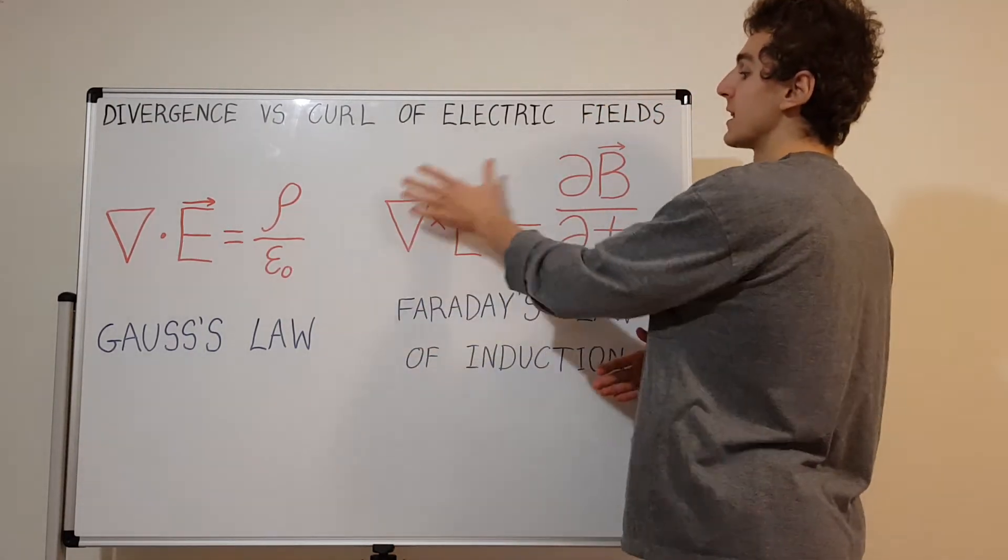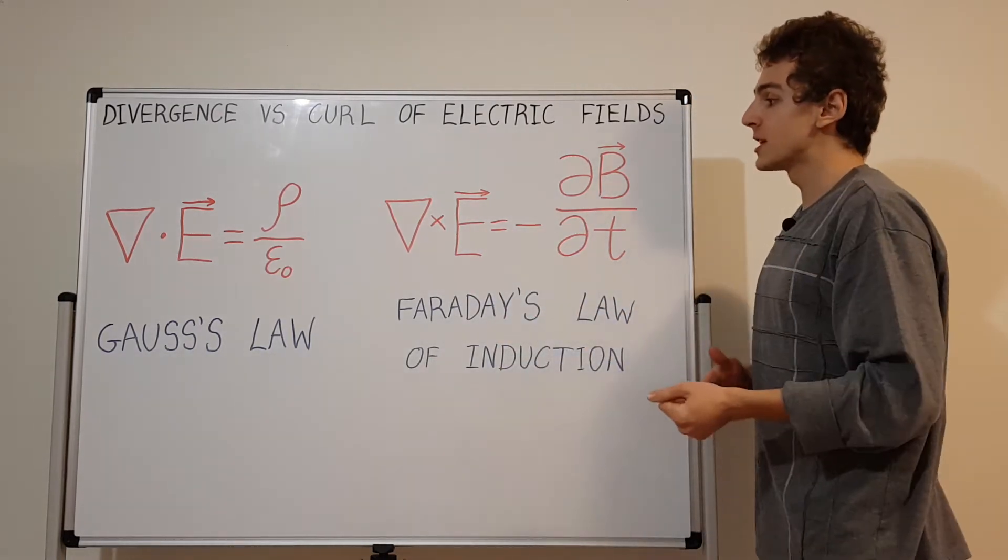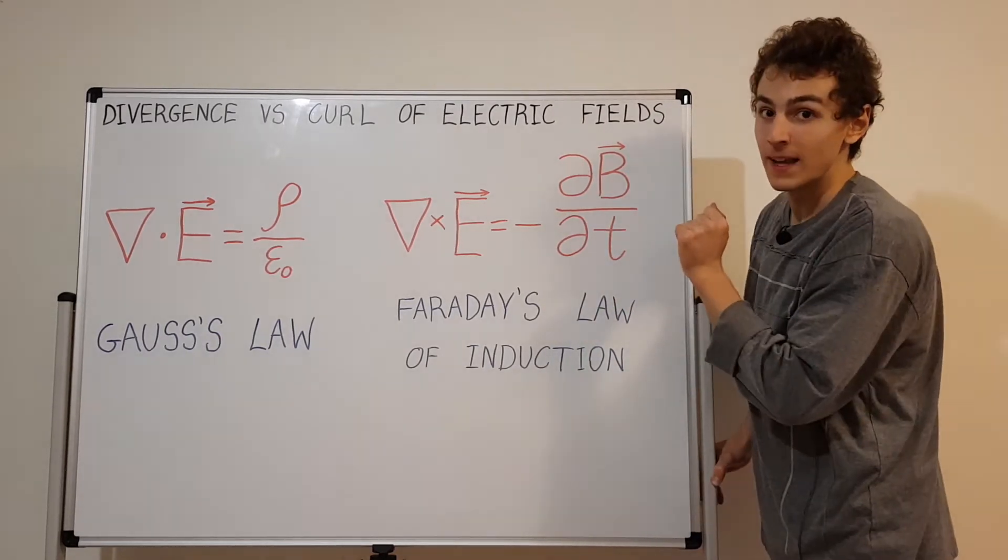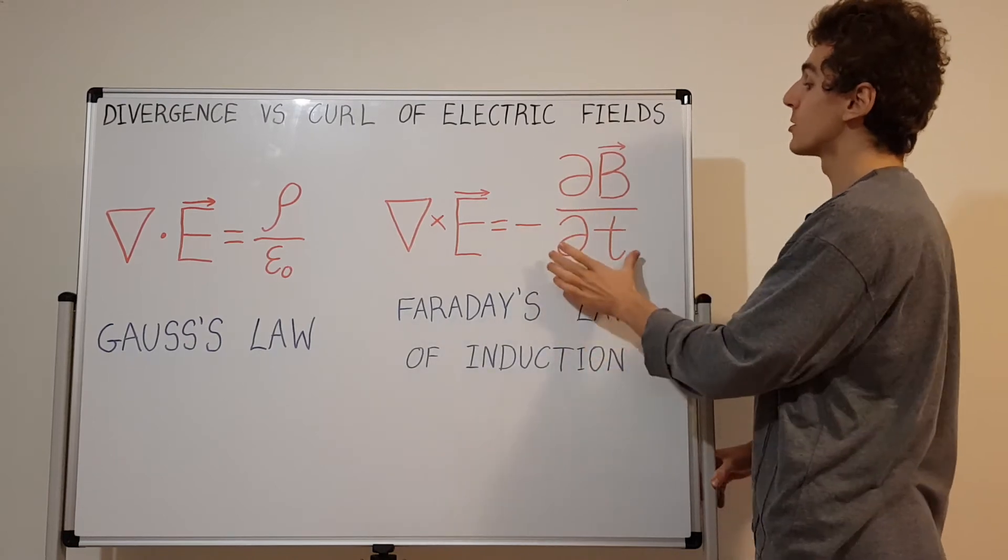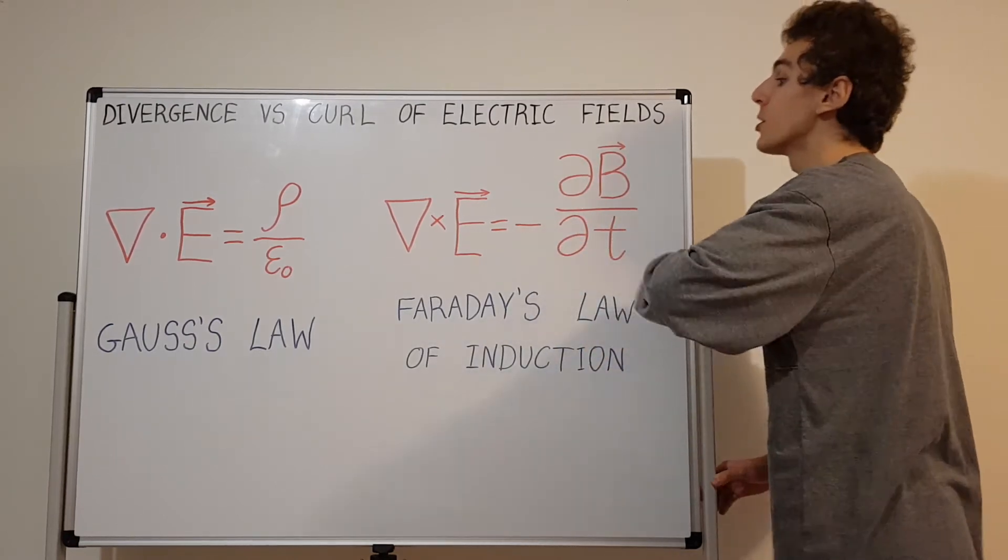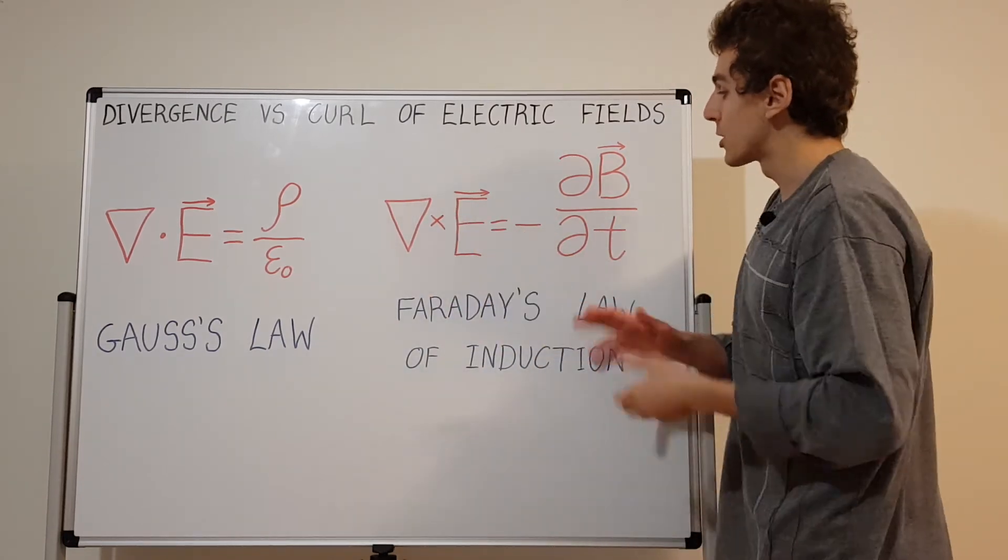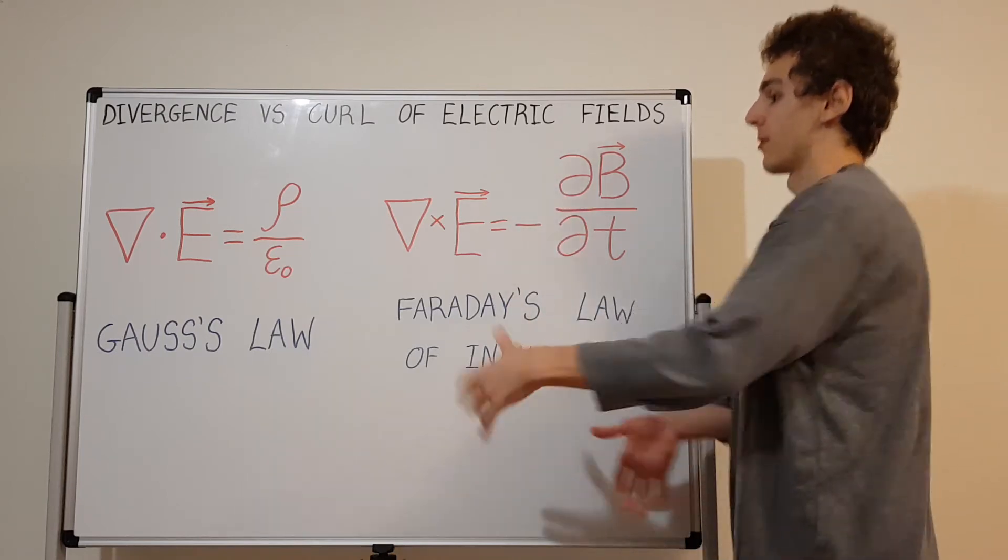What about the case for curl? Curl for the electric field can only be produced if you have a changing magnetic field. If you have a changing magnetic field, a non-zero time derivative of the magnetic field, you're going to get some circulation. That's what curl represents. It's a circulation and a vector quantity that tells you the axis of rotation.